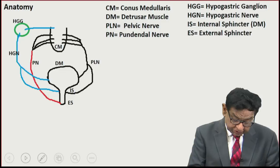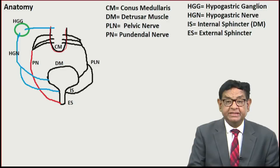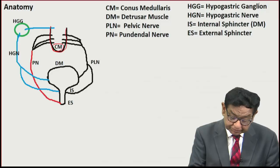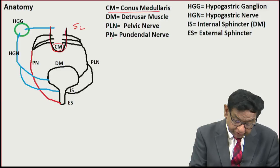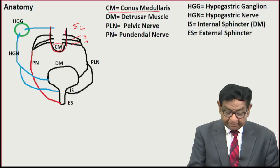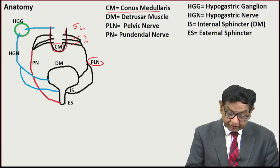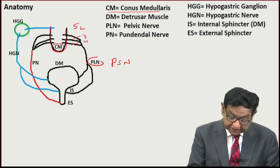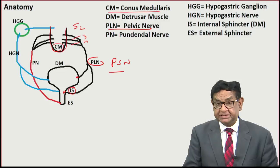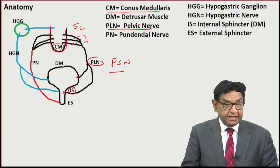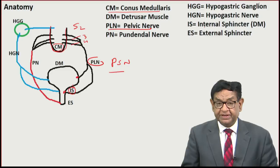This is the lower end of the spinal cord, and the terminal part is the conus medullaris. From the conus medullaris arise roots from sacral segments S2, S3, S4. These roots combine to form the pelvic nerve, which is a parasympathetic nerve. It supplies the detrusor muscle and the internal sphincter. The internal sphincter is part of the detrusor muscle.